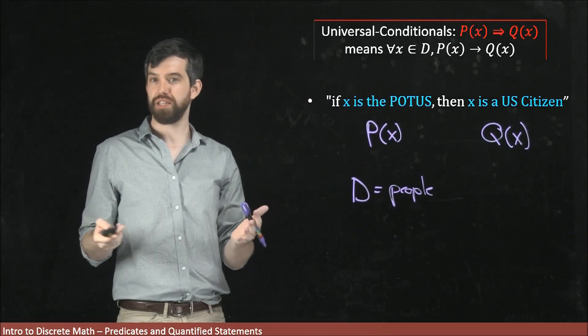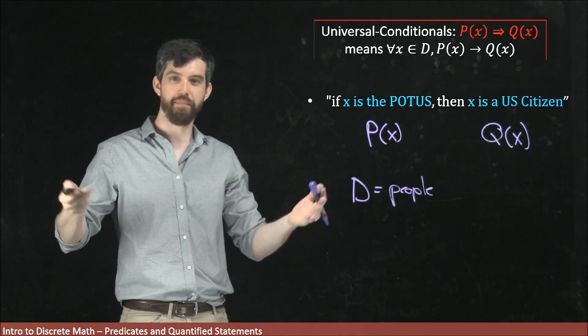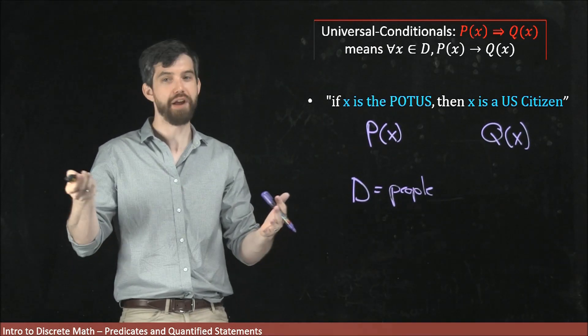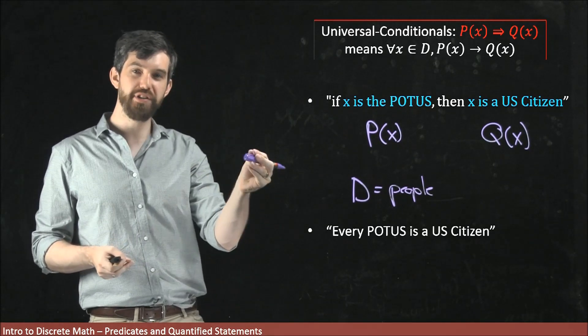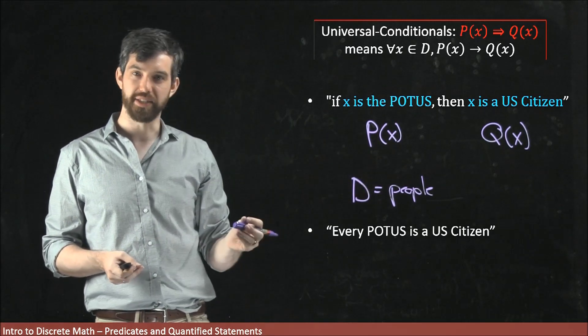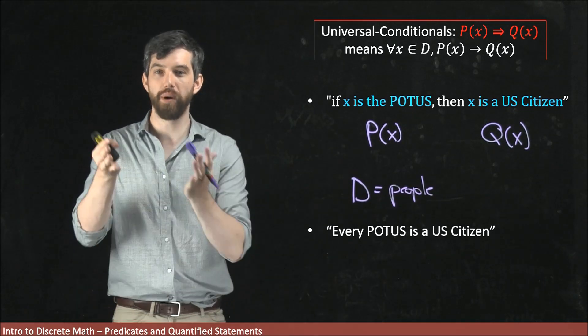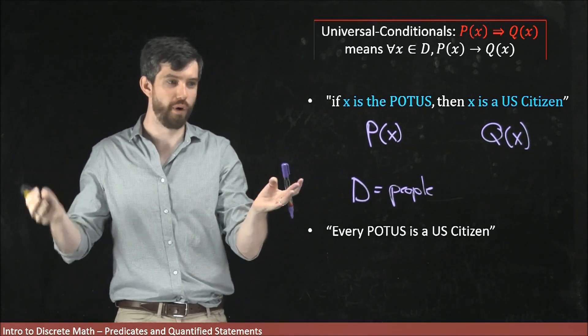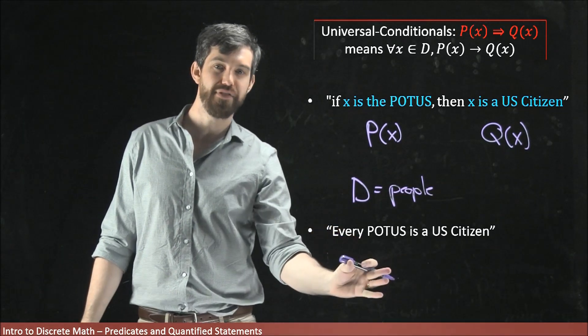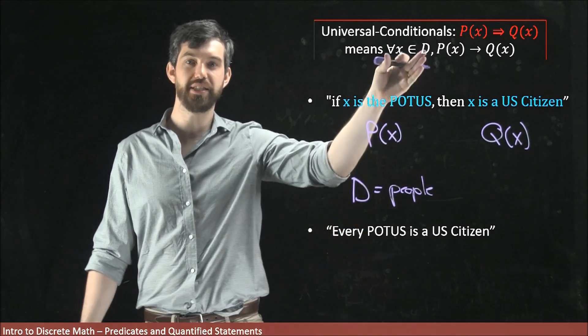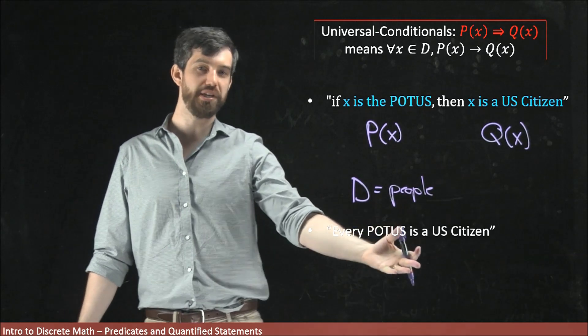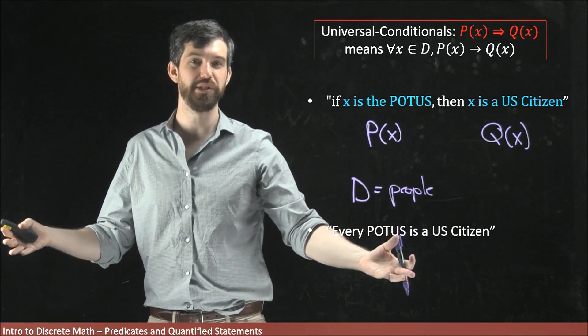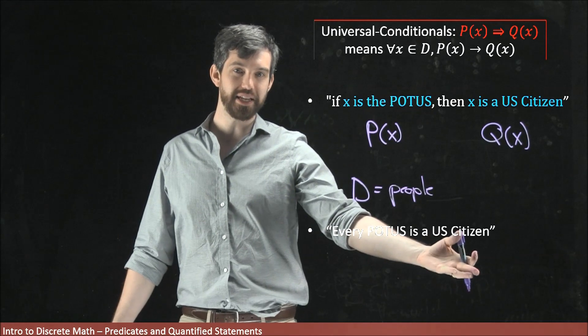Another way to phrase this in natural English that might make the for all or the every more explicit is: every President of the United States is a US citizen. I haven't put it in my formal if-then conditional form, but the every here is the same thing as for all. So saying every President of the United States is the same thing as saying if x is the President of the United States, then x is a US citizen.